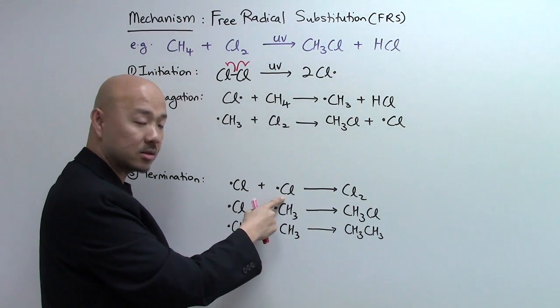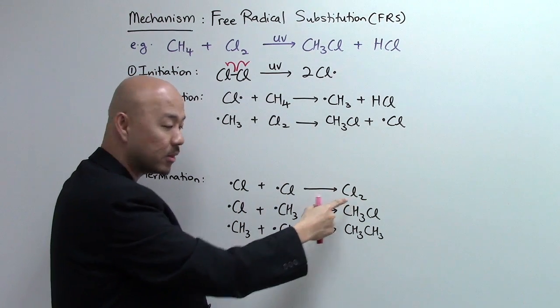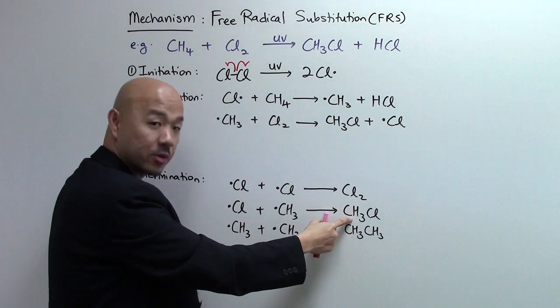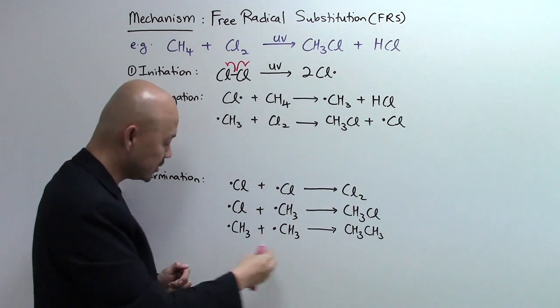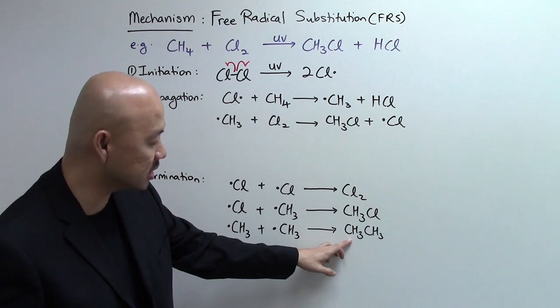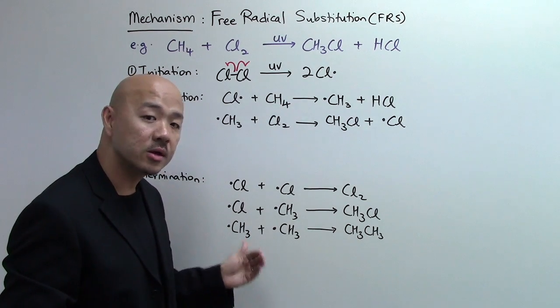The chlorine radical and chlorine radical come together to form chlorine molecule. The chlorine radical with the methyl radical will then form the product they are looking for, the chloromethane. Methyl radicals may also come together, and this gives you CH3CH3, ethane molecule.